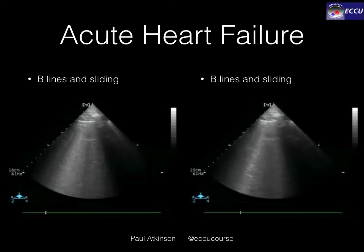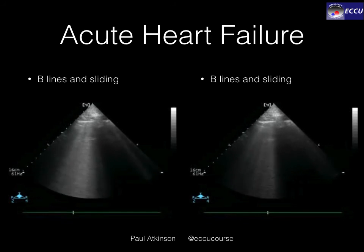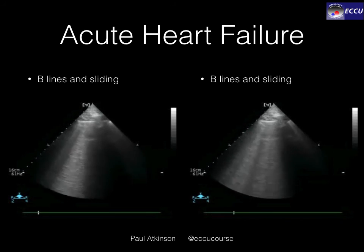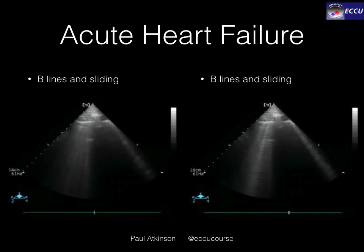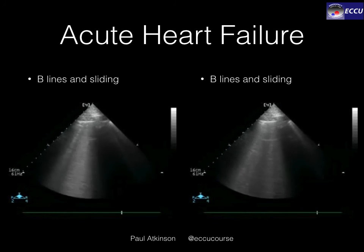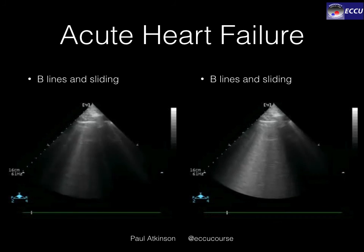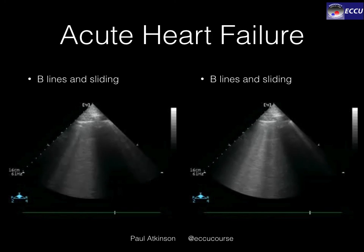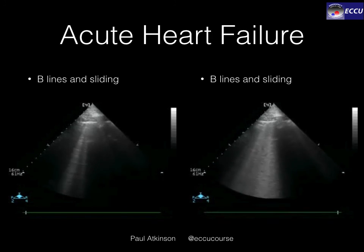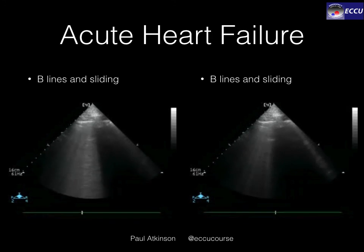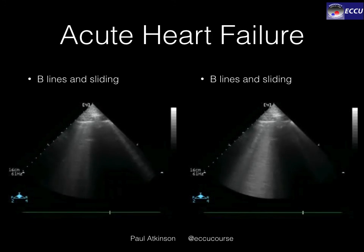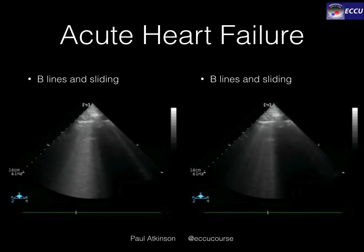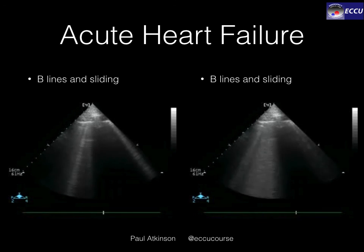The fewer B-lines seen, the less likely there is interstitial thickening or fluid. The more B-lines seen, the more likely it is. As a rule, we tend to advise that you see three B-lines in at least two zones bilaterally to make a diagnosis of acute heart failure.